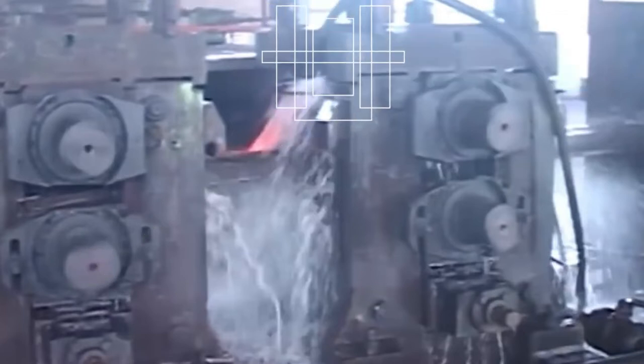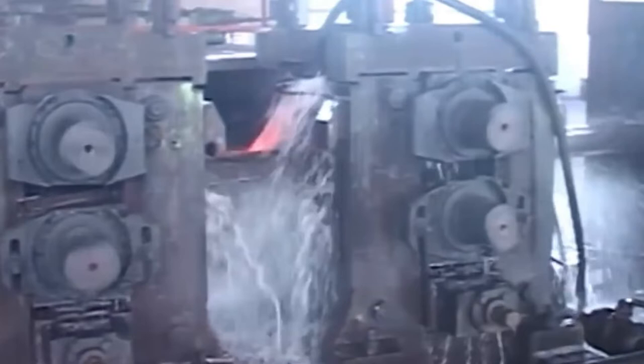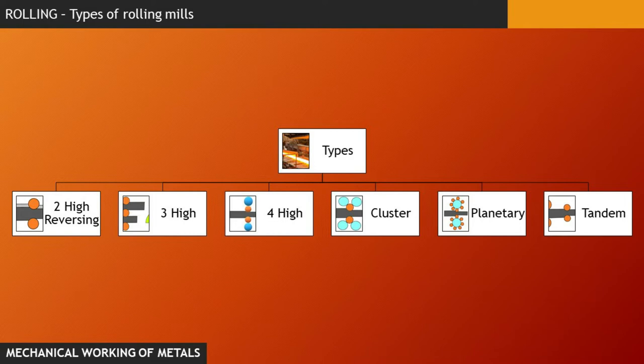These rolling mills are classified according to the number of rolls in the working stand. And hence, on the basis of the same, we have six basic classifications for a rolling mill.